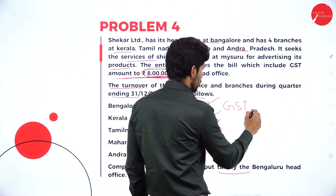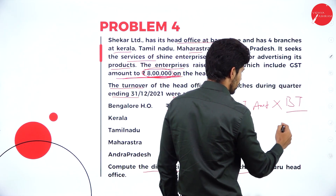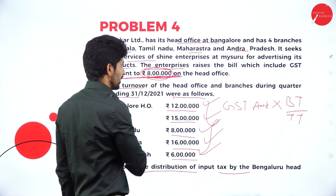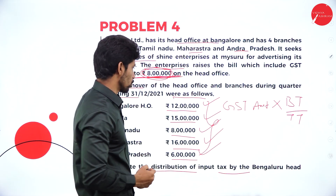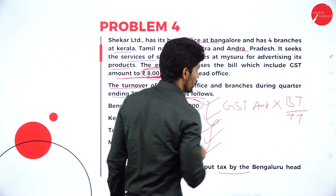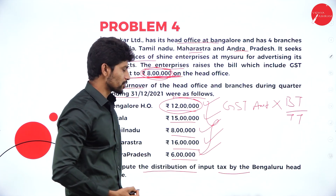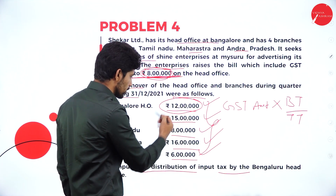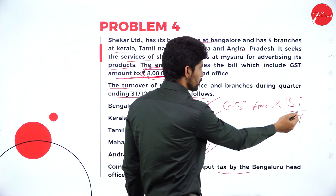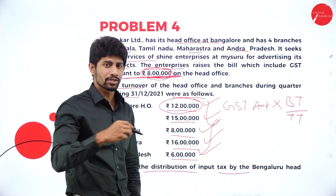The formula is: GST amount into branch turnover divided by total turnover. The GST amount here is 8 lakh rupees. For the Bangalore branch, the turnover is 12 lakh rupees, so it is 8 lakh into 12 lakh divided by total turnover. Total turnover is the sum of all five branches' turnover. So 8 lakh rupees into 12 lakh of Bangalore branch divided by total turnover gives you the ratio for Bangalore head office out of the 8 lakh rupees. That is how you solve the problem.